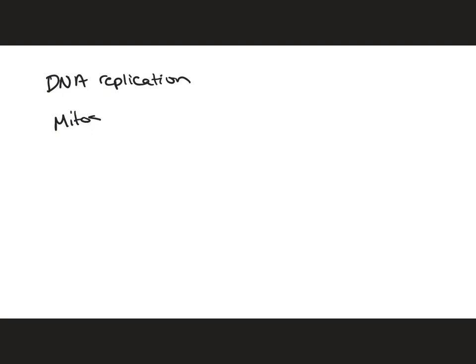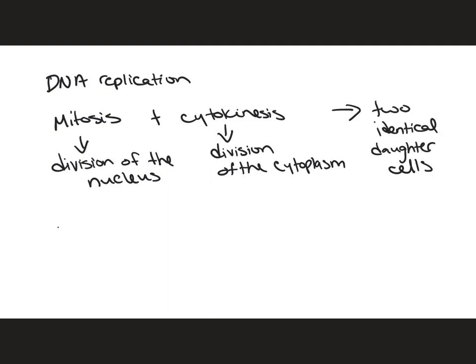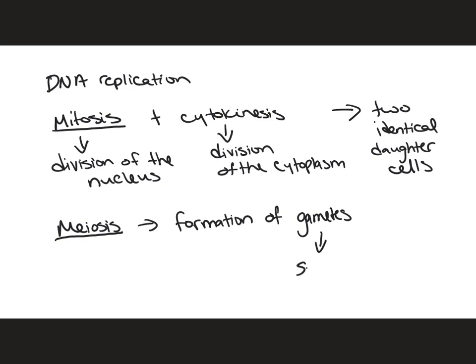Meiosis is not to be confused with mitosis. Mitosis, a concept which I've talked about in another video, is the division of the nucleus. Mitosis along with cytokinesis, which is the division of the cytoplasm, both result in the formation of two identical daughter cells. However, meiosis will result in the formation of gametes — gametes include both sperm and egg.